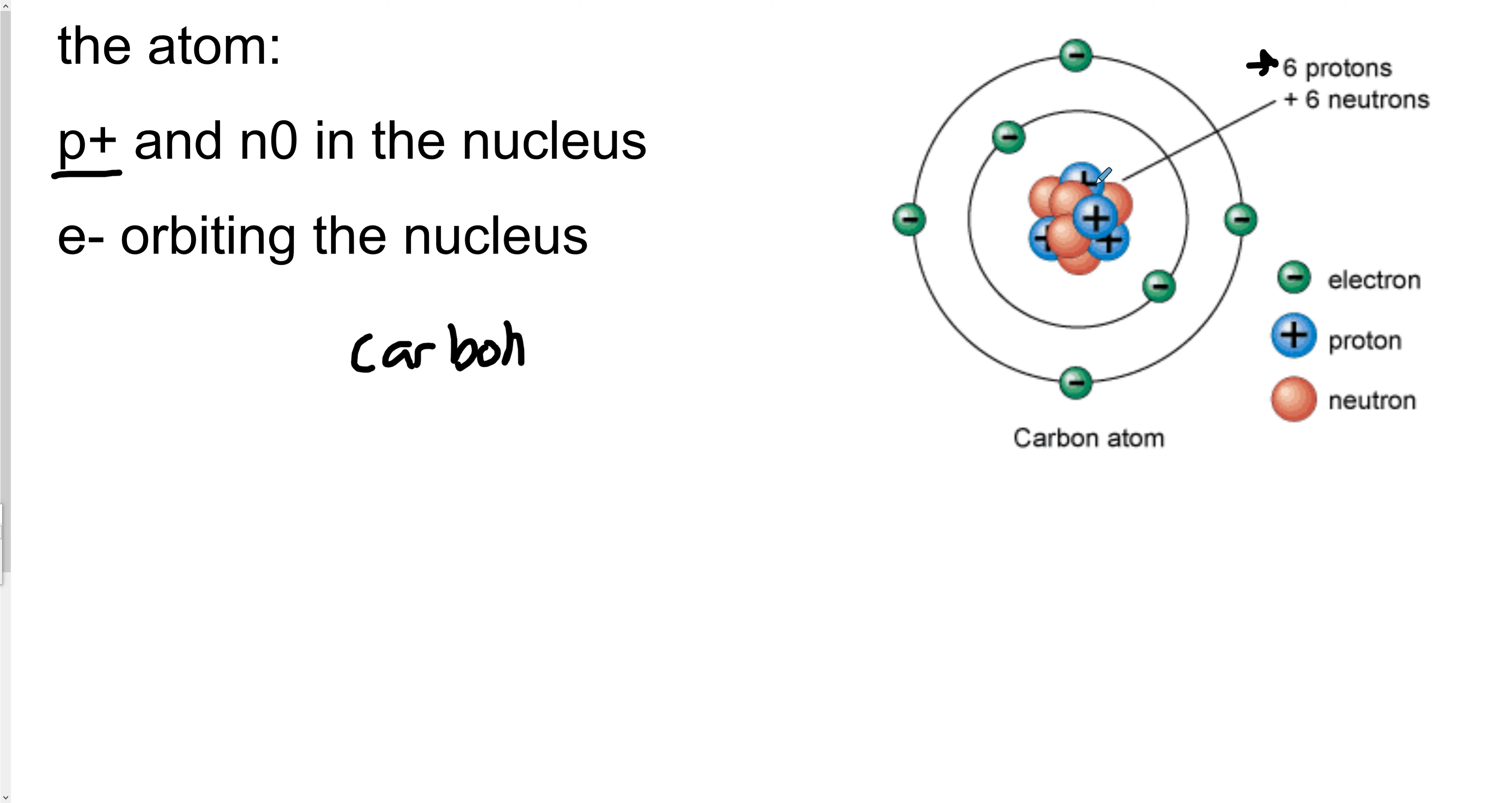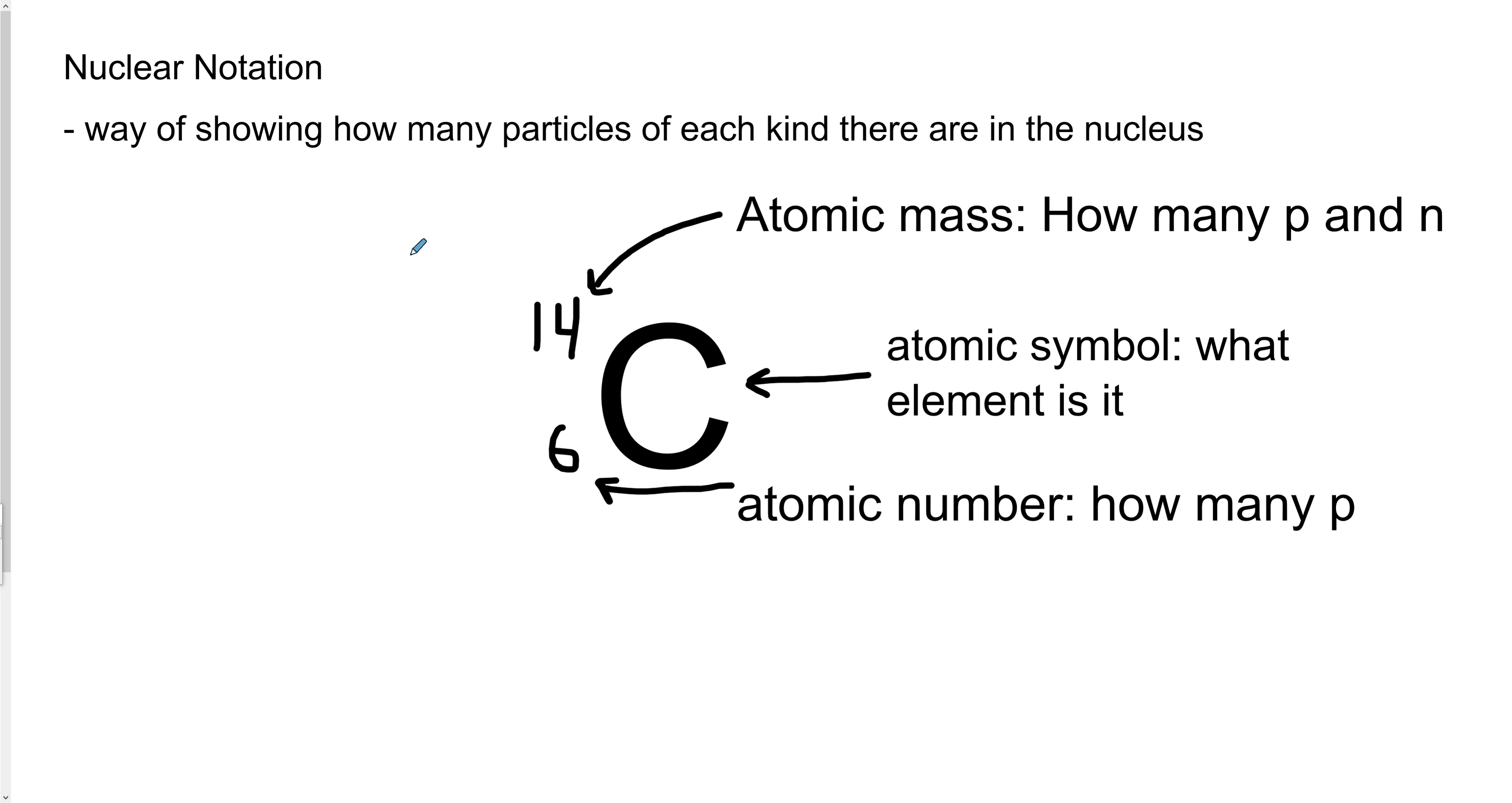So there needs to be a way to explain what's going on in a nucleus without drawing every nucleus. And there is, it's called isotope or nuclear notation. It's really simple. So here I have an atom, this is an atom of carbon. You can see that because the symbol is C. Up top, we have what's called the atomic mass. And below, we have what's called the atomic number.